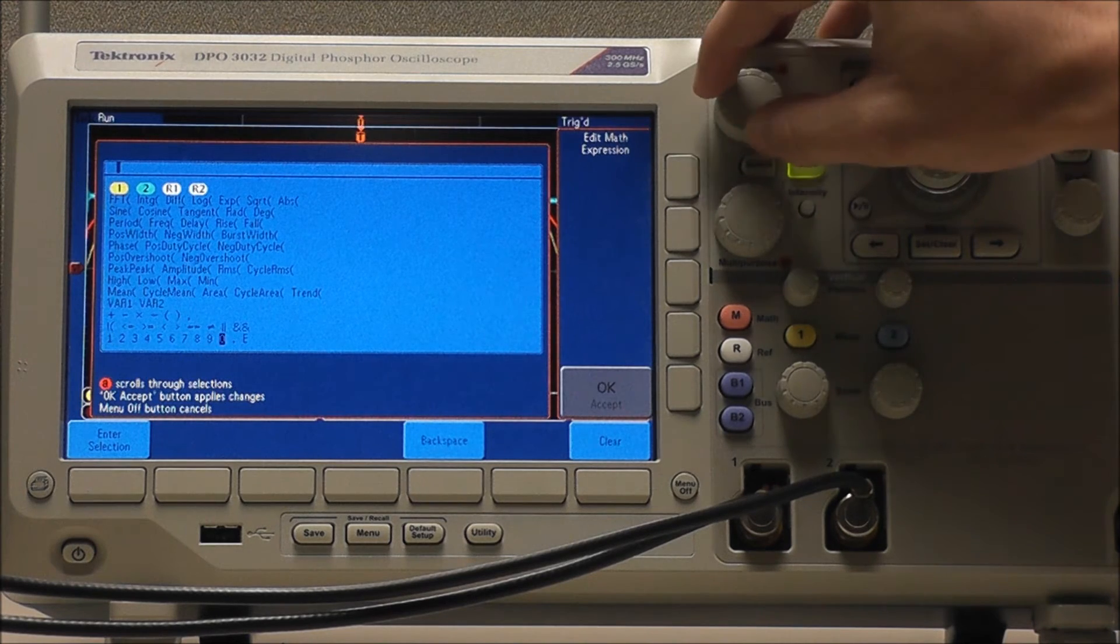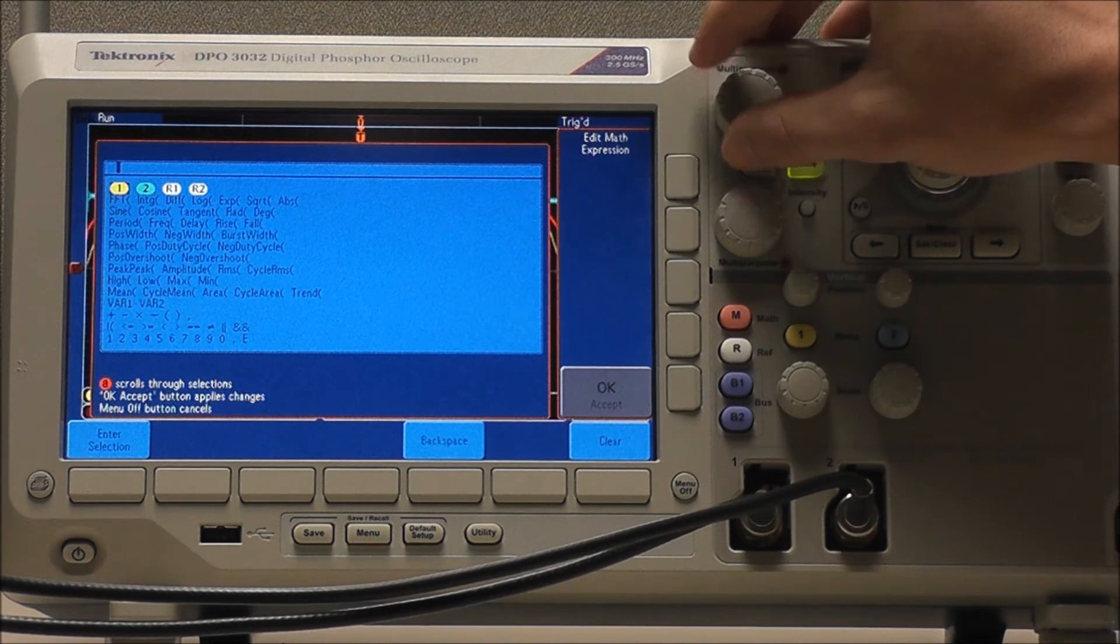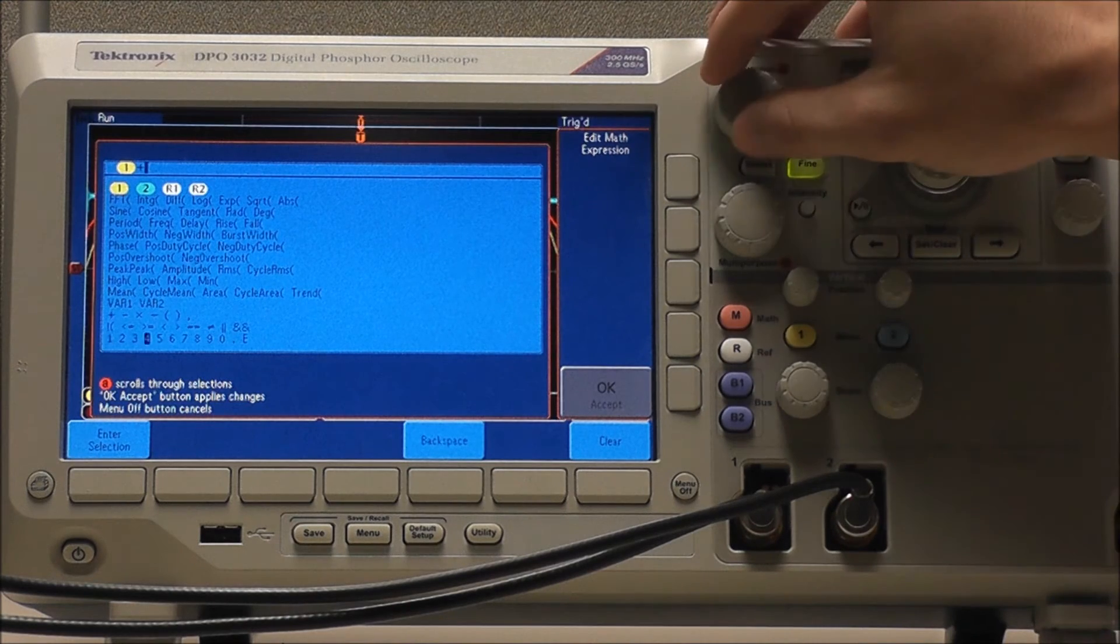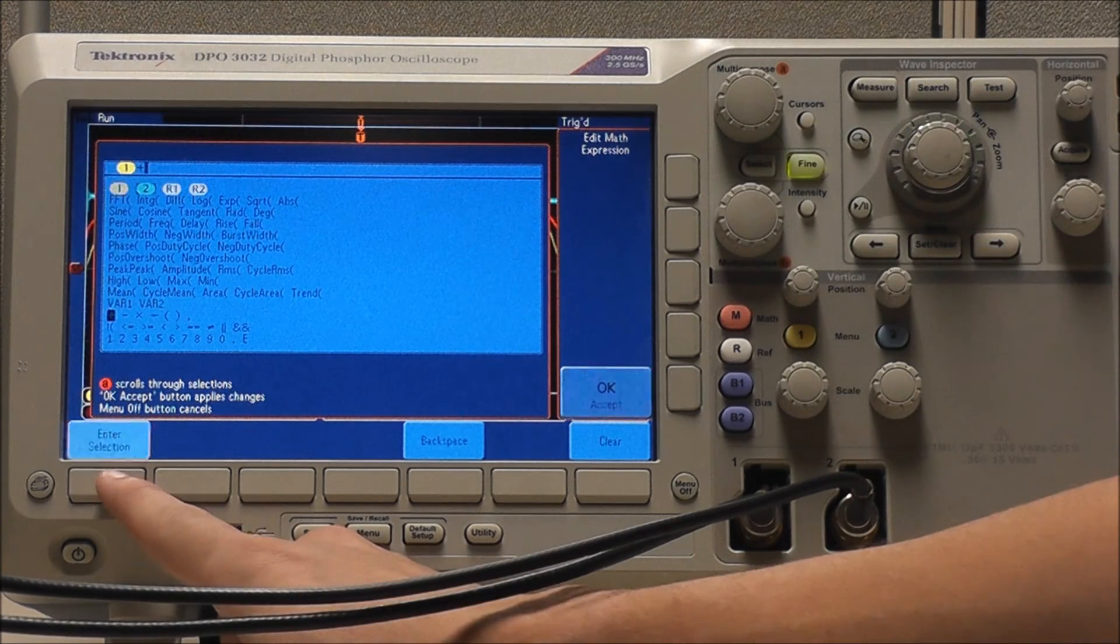Using multipurpose A to scroll through our options, we can select our channels, operators, etc. The main purpose of this feature is to be able to construct and perform really complex equations.